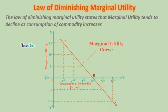For example, if you ate mangoes today and then ate more mangoes continuously, you will see that your marginal utility becomes less. The consumption should be continuous for the law of diminishing marginal utility to apply — if there is too much of a time gap, the decrease in marginal utility may not occur in the same way. So the consumption should be continuous.